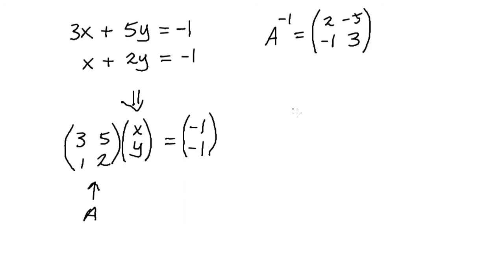we can multiply both sides by A to the minus 1 so that on the left hand side we have an identity matrix which doesn't affect the value of (x; y).